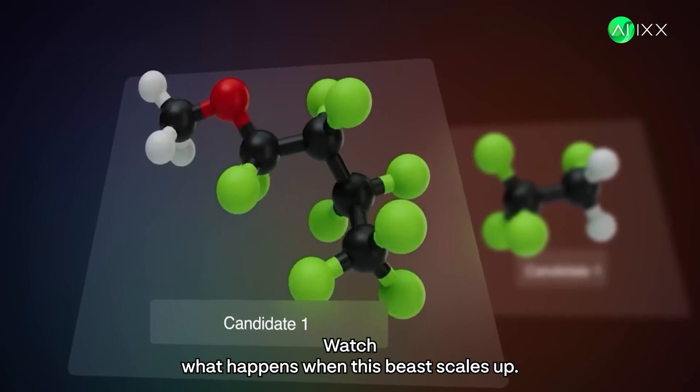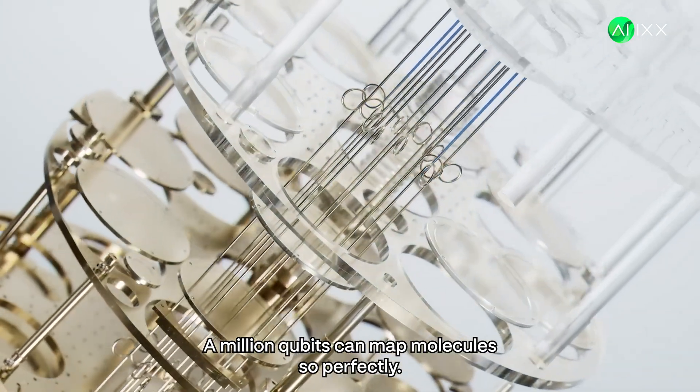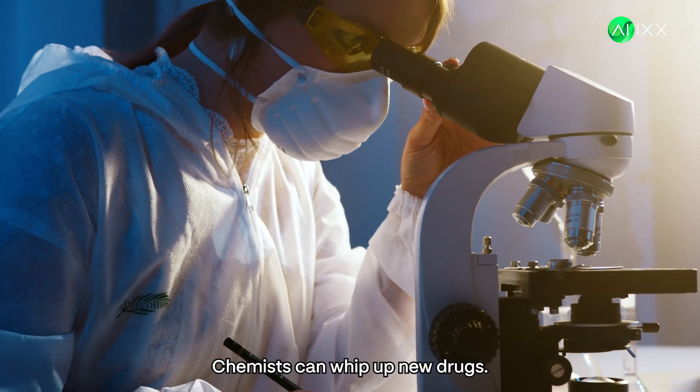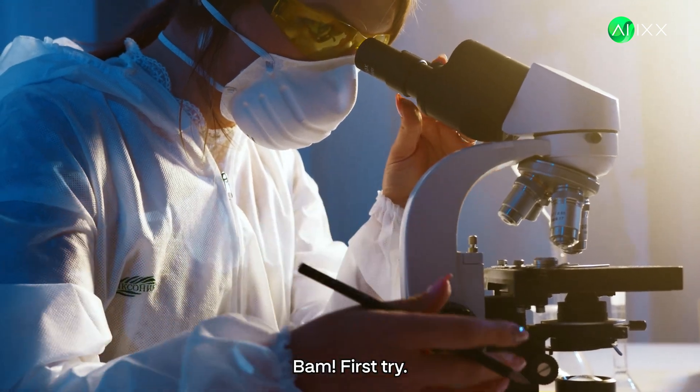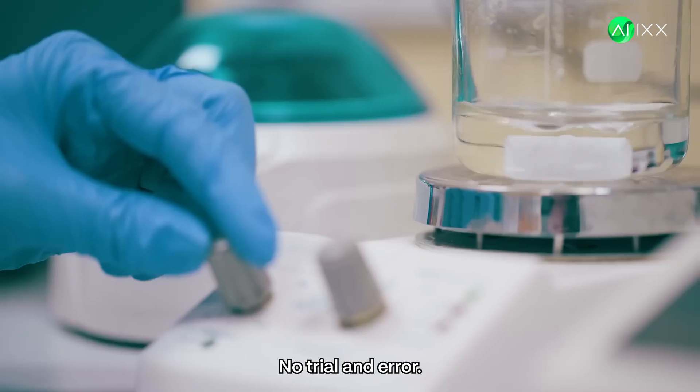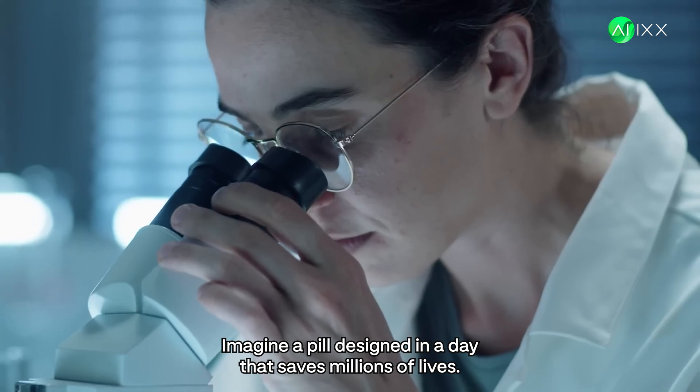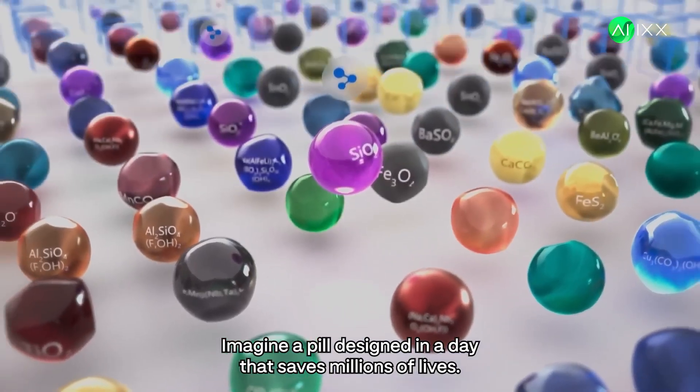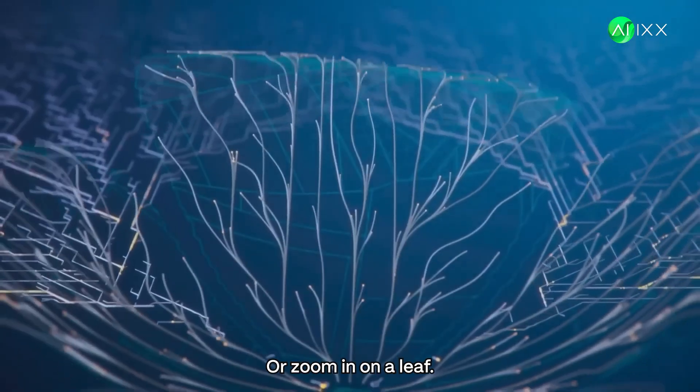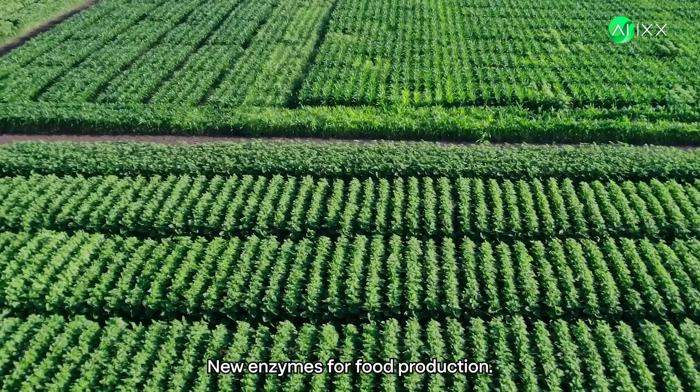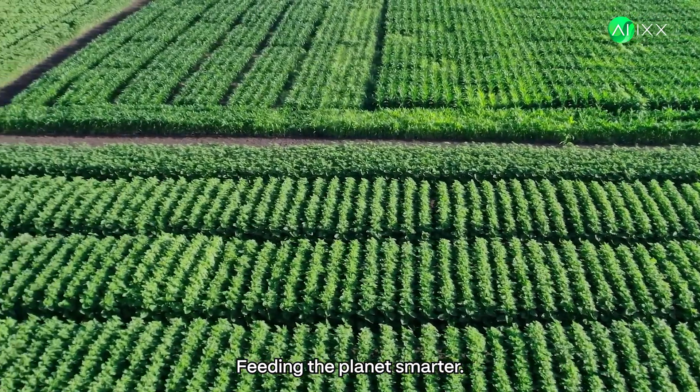Watch what happens when this beast scales up. A million qubits can map molecules so perfectly, chemists can whip up new drugs. Bam. First try. No trial and error. Imagine a pill designed in a day that saves millions of lives. Or zoom in on a leaf. New enzymes for food production. Feeding the planet smarter.